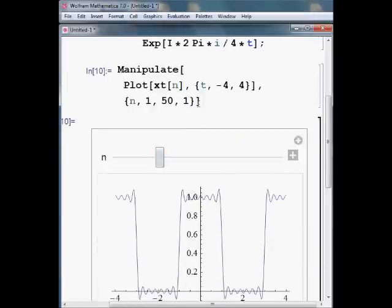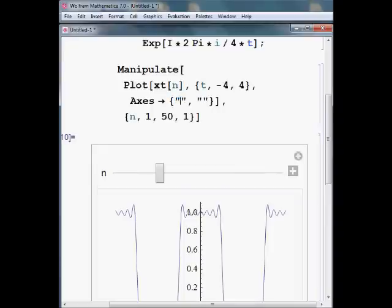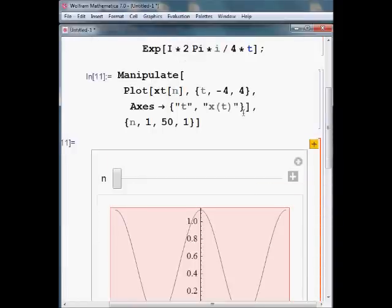Now let's label our axes. This must be done inside the plot function, not with the manipulate. So axes, and do the brackets, your x and your y labels, t and then x(t) for the y axis. What did I do wrong here?